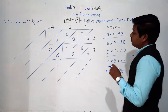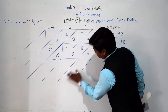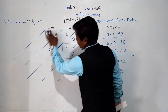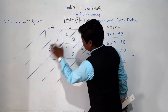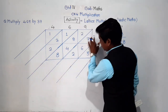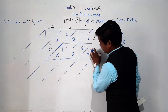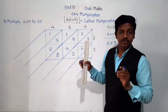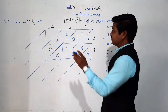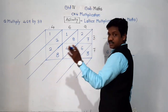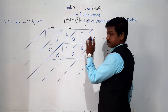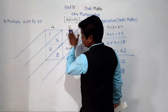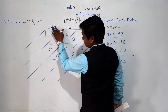Now, can you see the diagonal strips? There are five strips in total: 1, 2, 3, 4, and 5. To understand the strips separately, you can give different light colors to each strip in your notebook so that each strip is clearly visible and separate.